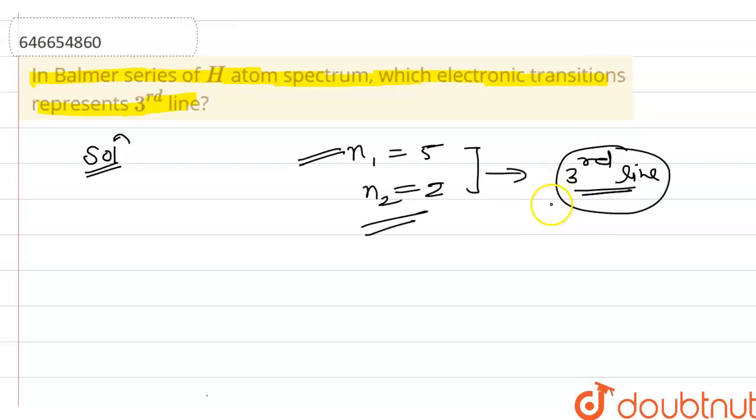So you have to return n1 equal to 5 and n2 equal to 2. This is your required answer to this question. I hope it is clear to you. Thank you very much for watching guys.